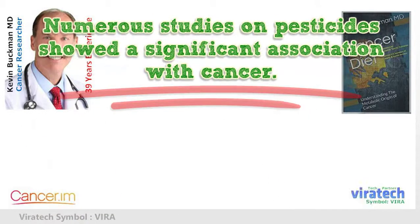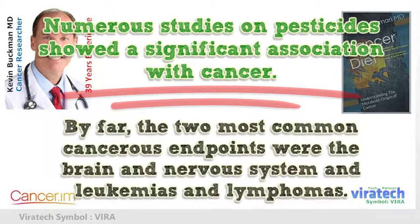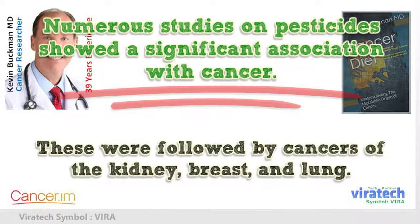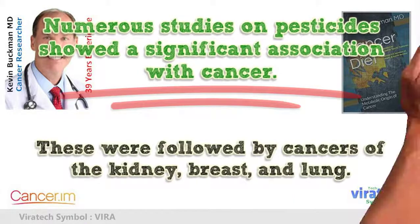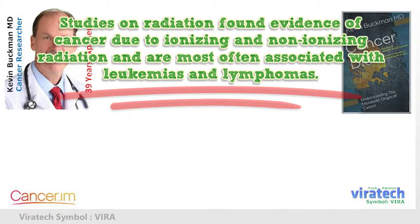Numerous studies on pesticides showed a significant association with cancer. By far, the two most common cancerous endpoints were the brain and nervous system, and leukemias and lymphomas. These were followed by cancers of the kidney, breast, and lung. Studies on radiation found evidence of cancer due to ionizing and non-ionizing radiation, most often associated with leukemias and lymphomas.